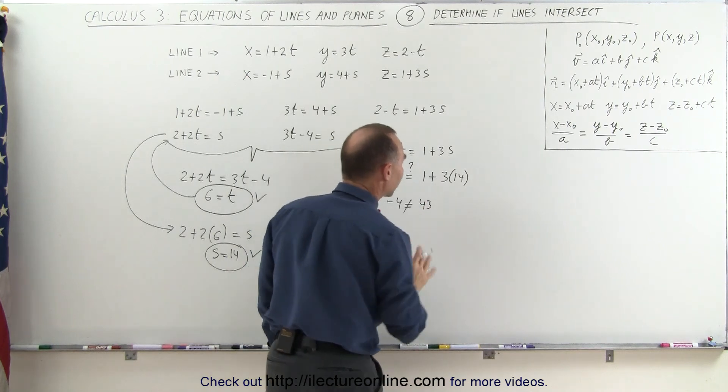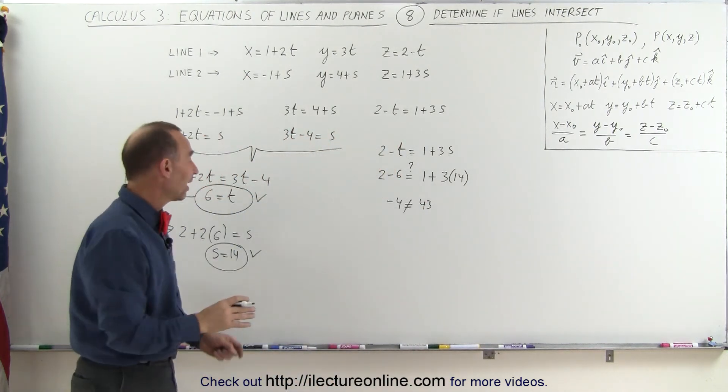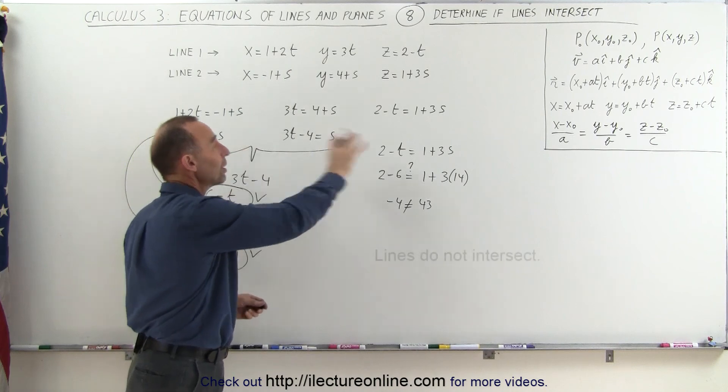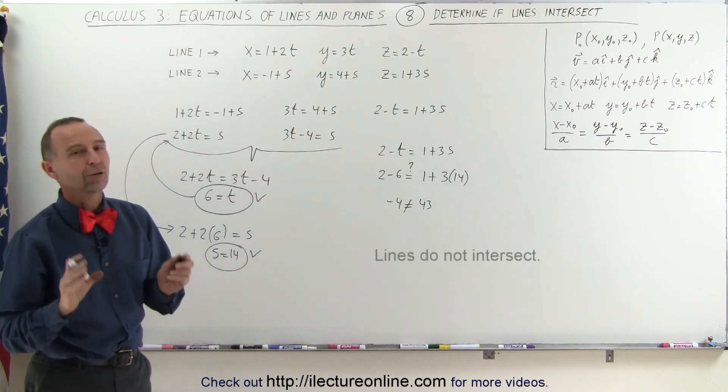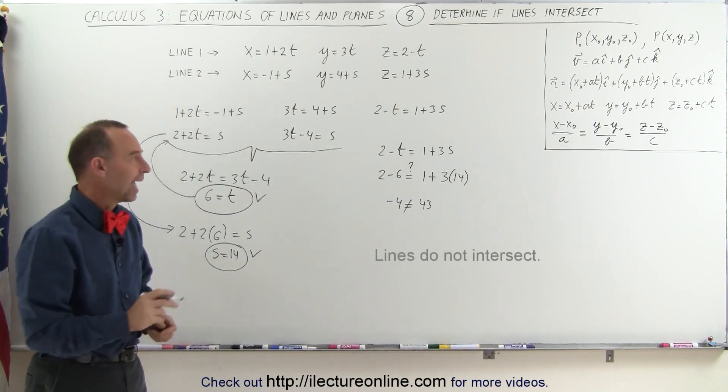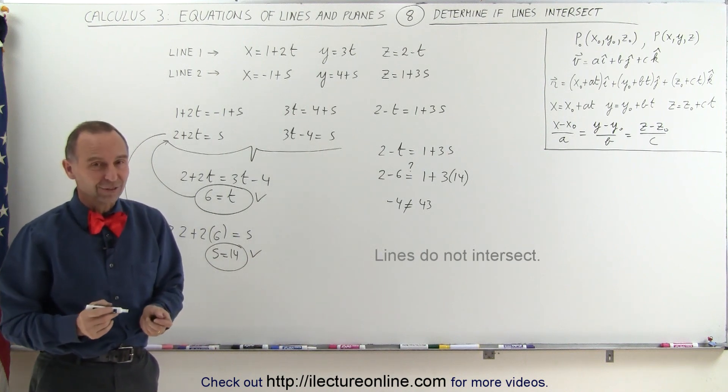So therefore I can conclude, since I couldn't find value for t and s that satisfies all three equations at the same time, I know that those two lines do not intersect at a single point in space, and that's how that's done.